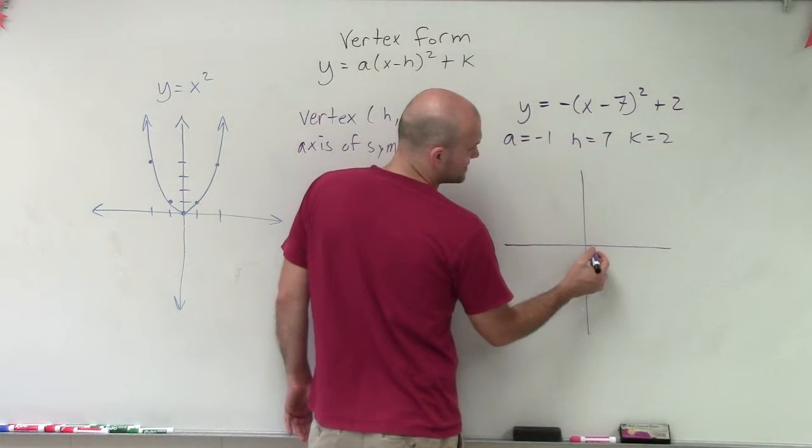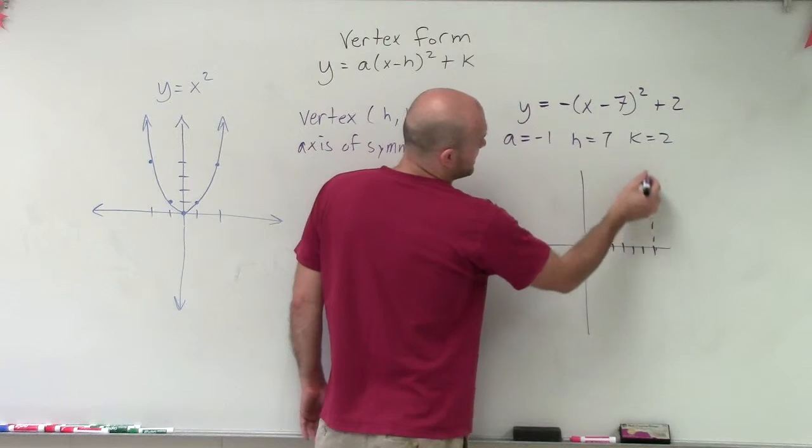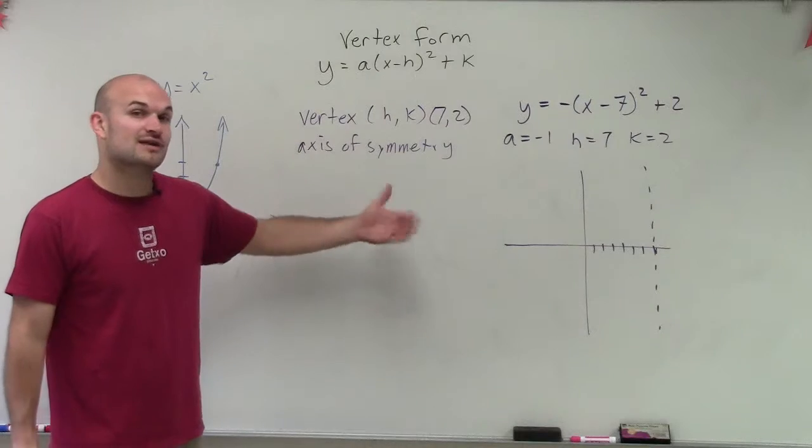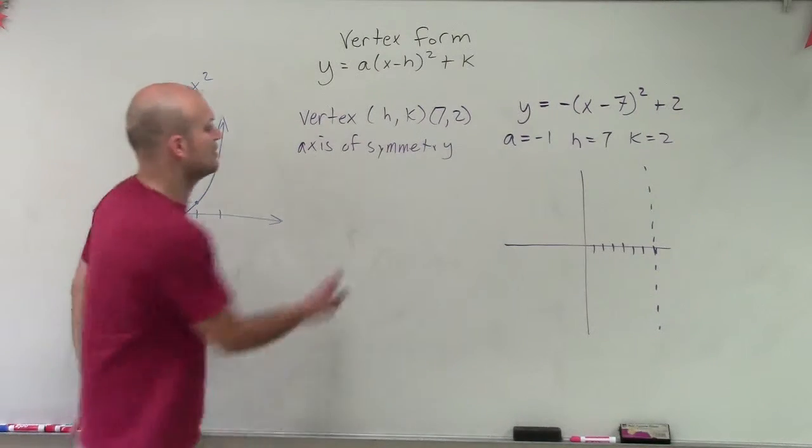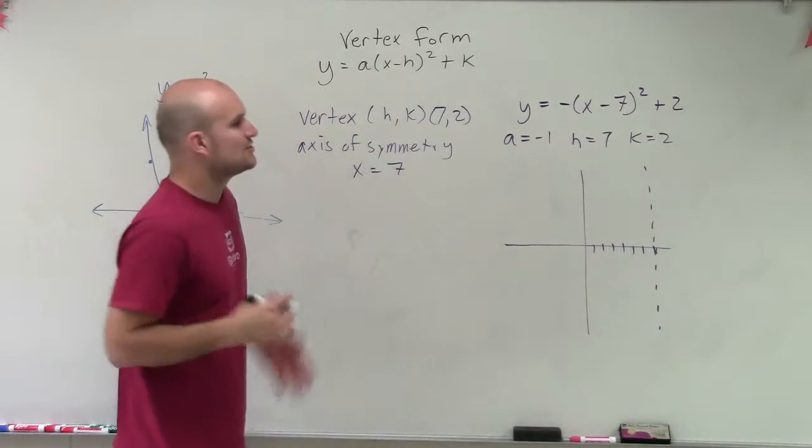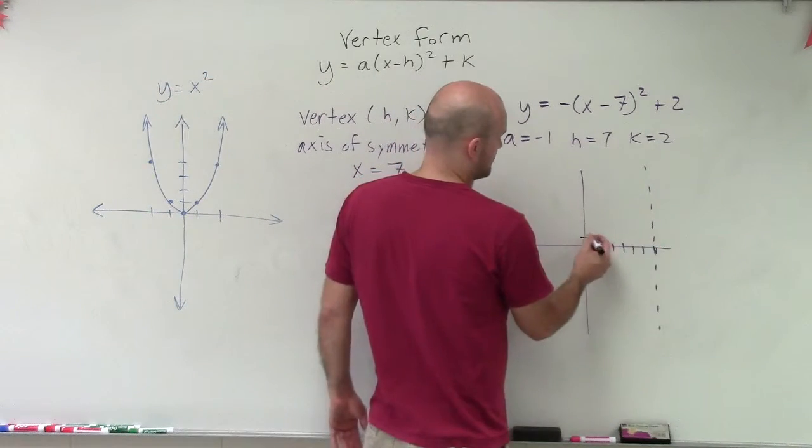So I'm going to shift this over 7 units. 1, 2, 3, 4, 5, 6, 7. And that's now going to be my new axis of symmetry. However, my graph is also now being shifted down 2 units. So our axis of symmetry is x equals 7. OK. So now our vertex, we said, was over 7 and then up 2. All right?